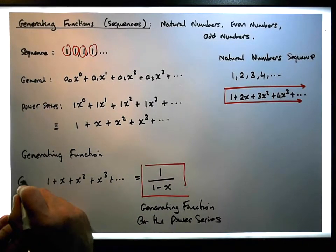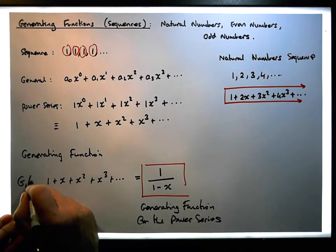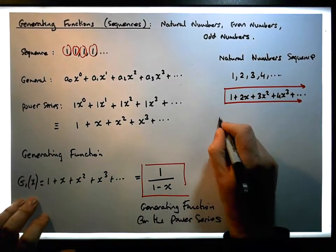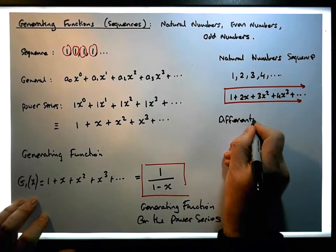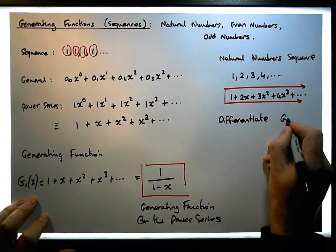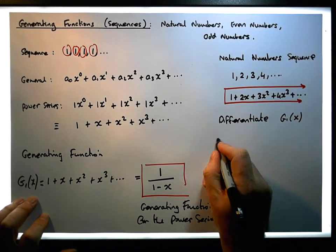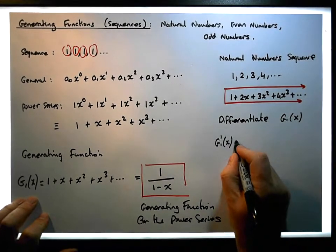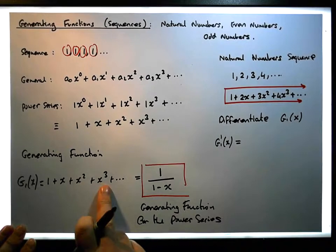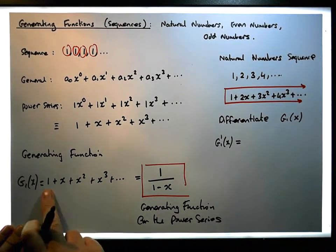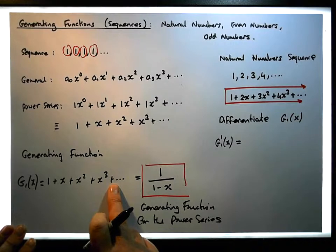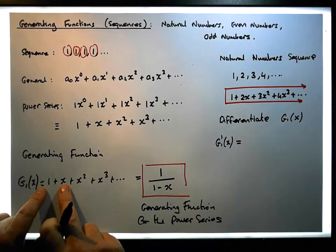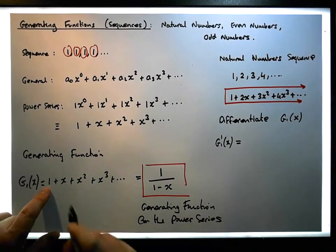Let's call this power series g1 of x. What we want to do is differentiate it. The derivative of a summation is the same as the sum of the derivatives of the individual terms, so we're going to differentiate each term separately and see what we end up with.